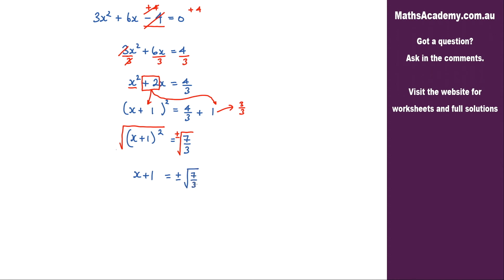And the last step is to eliminate that plus 1 here by subtracting 1 from both sides. So that gives me that x is equal to negative 1 plus or minus the square root of 7 over 3.